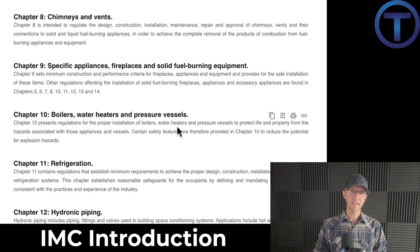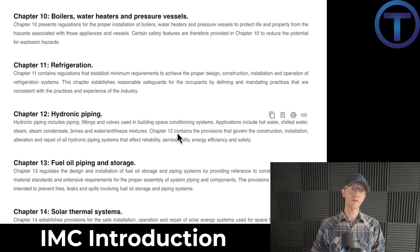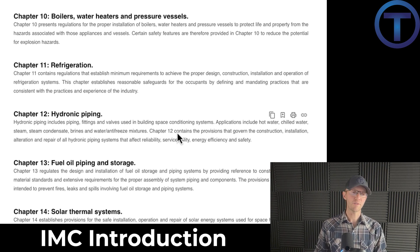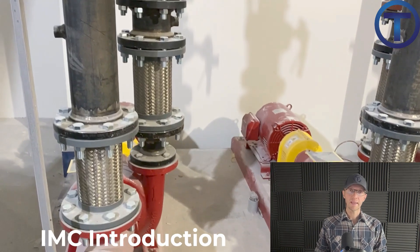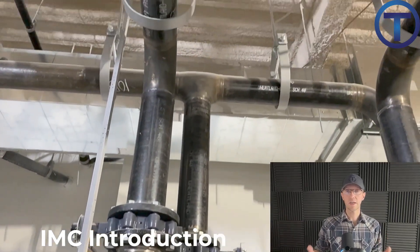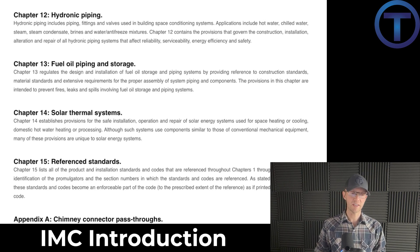Chapter eight is on chimneys and vents — not something we're going to cover in real depth. Chapter nine covers specific appliances, fireplaces, and solid fuel burning equipment — not much there for us. But chapter ten is boilers, water heaters, and pressure vessels, and plumbers are very often and very much involved with hydronic heating. Chapter eleven is on refrigeration, dealing with refrigeration equipment and air conditioning — we won't be covering that. Chapter twelve is on hydronic piping, which goes right alongside the boilers as we're running pipes to distribute heat to the building — that chapter has a lot of great information for plumbers. The rest — chapter thirteen fuel and oil piping, fourteen solar thermal systems, and fifteen reference standards — we're not going to touch on much.